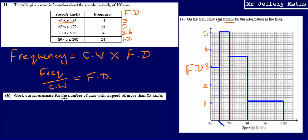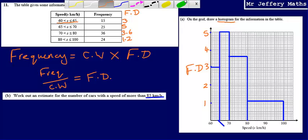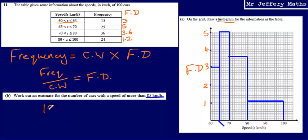Part B, we're asked to work out an estimate for the number of cars with a speed of more than 85 kilometers per hour. Kind of a couple of ways that you could do this. The simplest way, I think, is to look at 85 kilometers an hour. And what we can see is that we want more than 85. So we're talking about the 15 kilometers from 85 up to 100. And what we could say there is that that is 15 kilometers out of the 20 kilometers which are captured in that group.